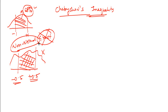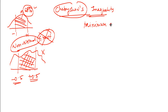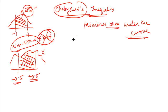Chebyshev's inequality can come to your help. It can say that this will be within some value — not exactly, let's say, 50% — but it has to be a minimum of some percentage. So it can give you an idea about what is the minimum area under the curve. It will not give you the exact value but it will help you get the minimum area.